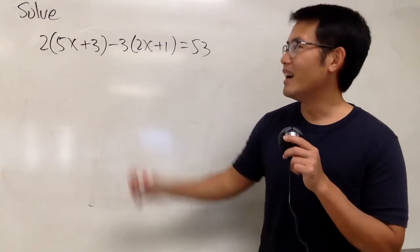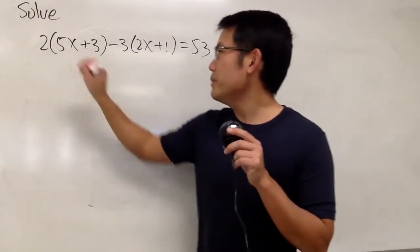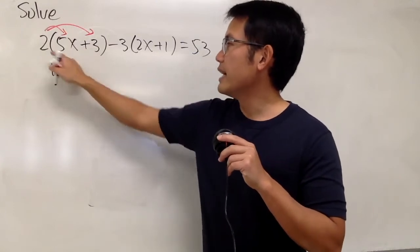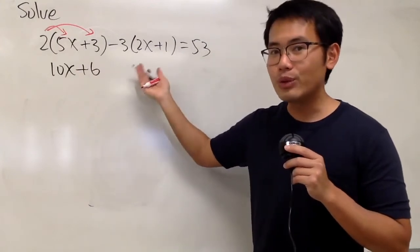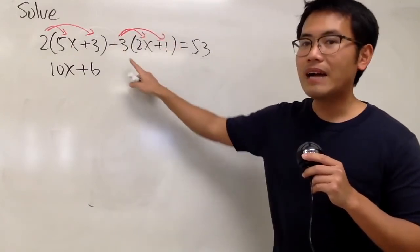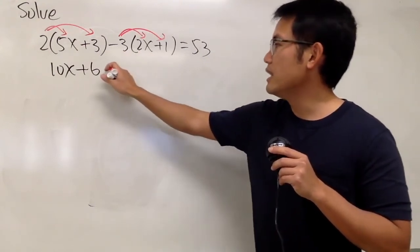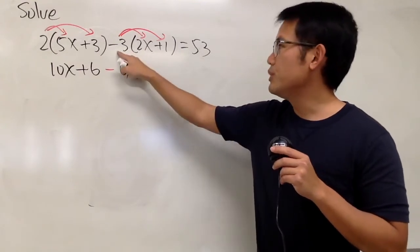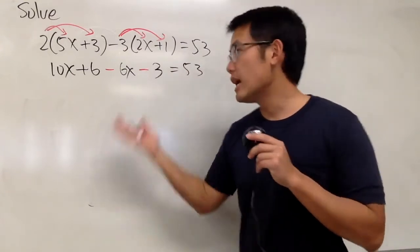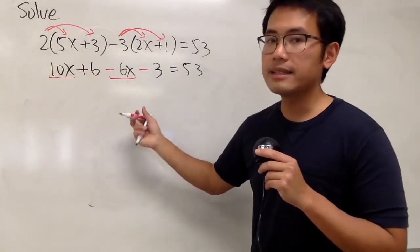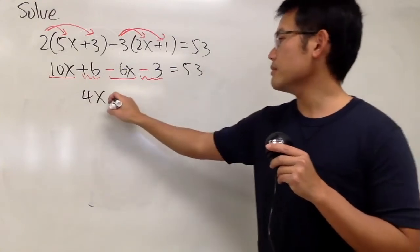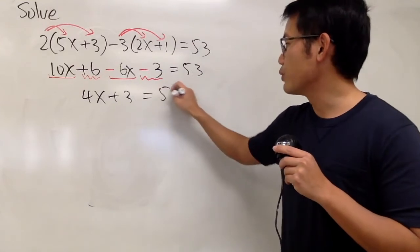We are going to solve this equation. As we can see, we have parentheses, so of course go ahead and work that out first — we have to take the number in front and distribute. Focus on this first: 2 times 5x gives us 10x, and 2 times plus 3 gives us plus 6. Then for the second part, we have minus 3 with a parenthesis, so we take this and multiply: negative 3 times 2x gives us negative 6x, and negative 3 times positive 1 gives us negative 3. The right-hand side stays as 53. On the left-hand side, 10x minus 6x combines to give 4x, and plus 6 minus 3 gives us plus 3.